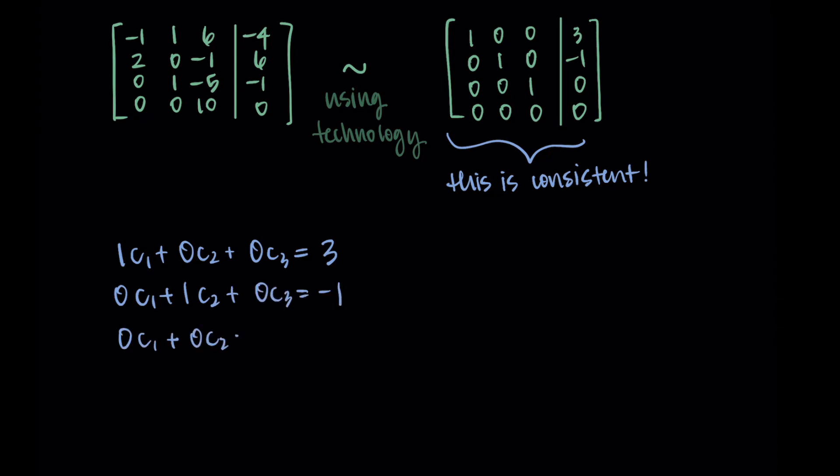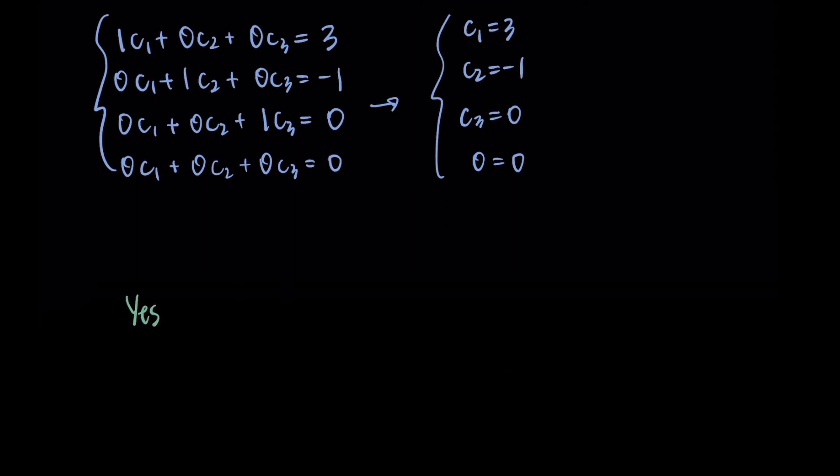So from this matrix, this reduced matrix, I can write out the system of corresponding equations. So those are the four statements that come from that matrix. I don't want to read them all out. But the important part here is that we get each of the coefficients. So we get each of those weights. We get c1 equals 3, c2 equals negative 1, and c3 equals 0. And then that last row just corresponds to 0 equals 0, which doesn't tell us anything, but that's fine.